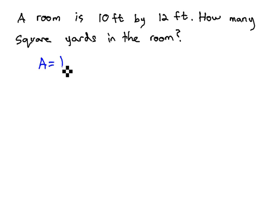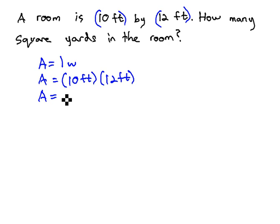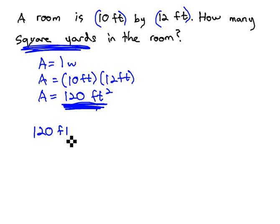Area, we know, is the length times the width, or 10 feet times 12 feet. 10 times 12 is 120, and feet times feet is feet squared. We have 120 square feet that we want to convert to square yards. We can do this by making the 120 square feet into a fraction, putting it over 1.